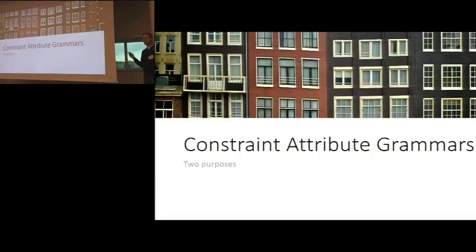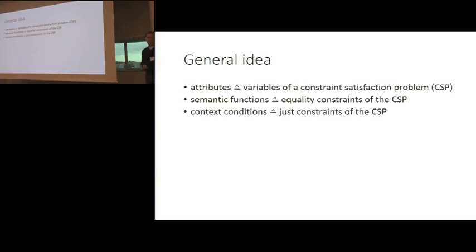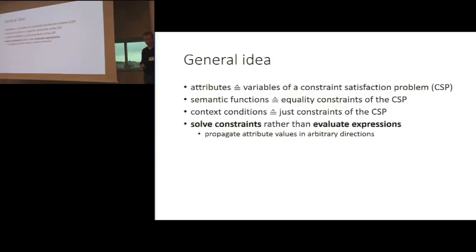The idea is to change from standard reference attribute grammars to what we have called constraint attribute grammars. The basic idea is that the attributes of an attribute grammar correspond to the variables of a constraint satisfaction problem. The semantic functions, which are really assignments, correspond to equality constraints of the same constraint satisfaction problem. And the context conditions are constraints anyway. So the parse tree with its attributes and equations defines a constraint satisfaction problem, and we pass it to a constraint solver.